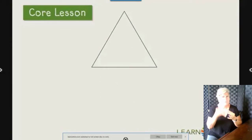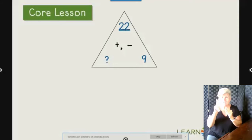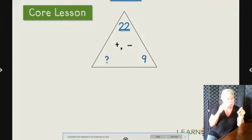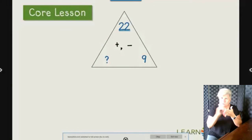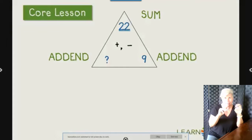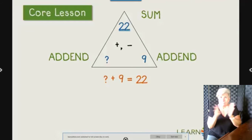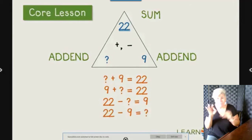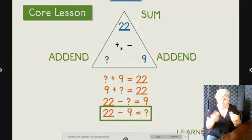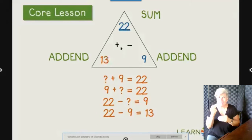You may see fact families represented in a triangle. The sum is always the largest number and will be on top; the two add-ins will be underneath. Sometimes you will be asked to answer a question where an add-in is missing, such as nine plus blank equals 22. To solve this, write out the four fact family equations until the missing add-in is on the right of the equal sign and solve. Our sum is 22 and our add-ins are 9 and some unknown value. The equation 22 minus 9 equals blank gives us our unknown on the right side: 22 minus 9 equals 13, so our unknown value is 13.